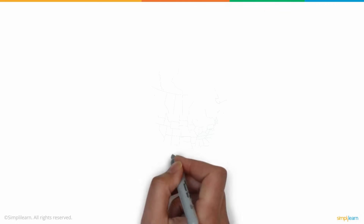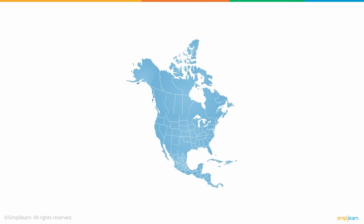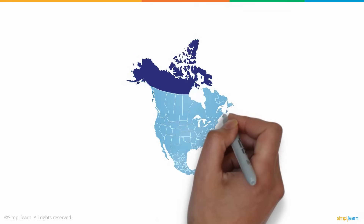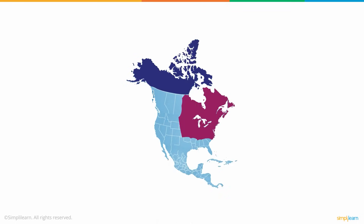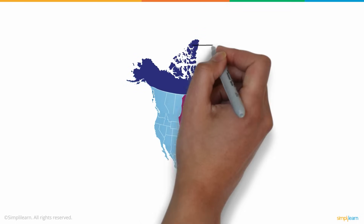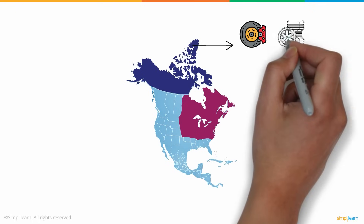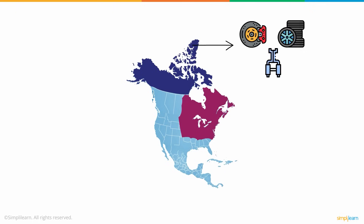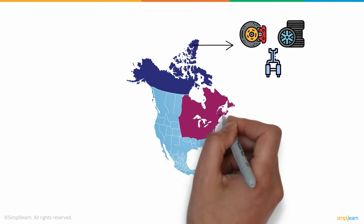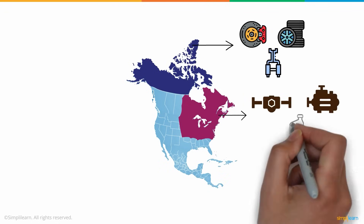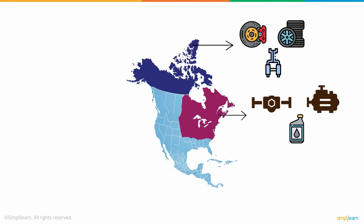Using Power BI's map visual feature, Ben understood the product demand at a regional level. He found that the northern regions were interested in performance kits for their imported sports cars, while the eastern regions had good demand for truck parts and lubricants.